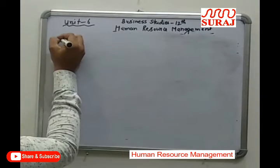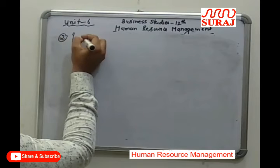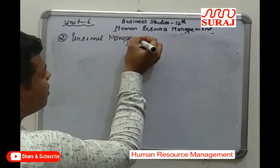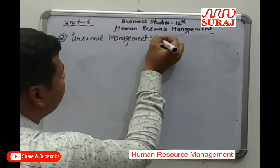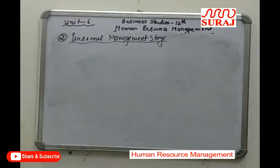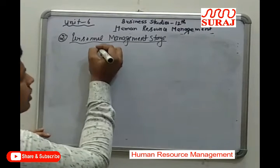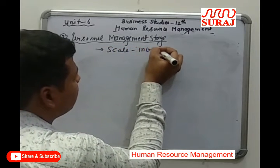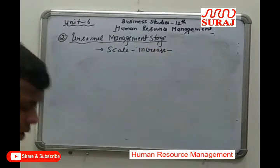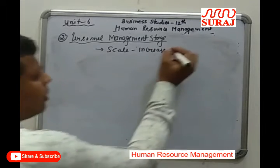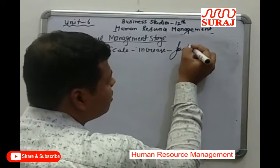The second stage is the personal management stage. It is the second stage of the evolution of HRM. When the scale of business increases — moving from small scale to medium scale — a factory system comes into the picture.